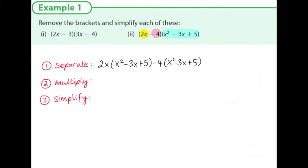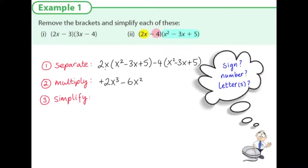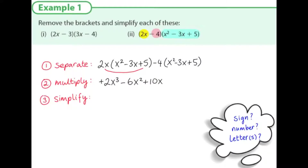We're going to multiply this out carefully. When we multiply, remember there are three things we're aware of: what's the sign, what's the number, and what are the letters. Starting off, 2x by x squared: the sign is plus, 2 by 1 is 2, and x by x squared is x cubed. 2x by minus 3x: the sign is minus, 2 by 3 is 6, and x by x is x squared. 2x by plus 5 gives us plus 10x. Minus 4 by x squared: sign is minus, number is 4, letter is x squared. Minus 4 by minus 3x: minus by minus is plus, 4 threes are 12, letter is x. Minus 4 by plus 5 is minus 20.